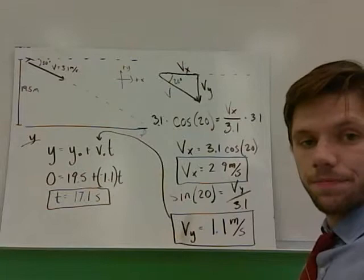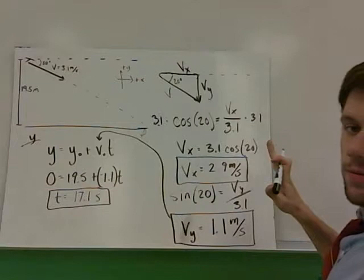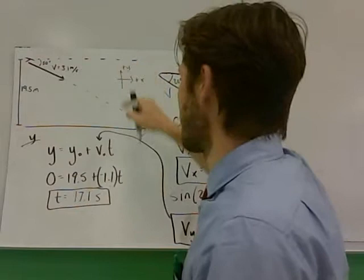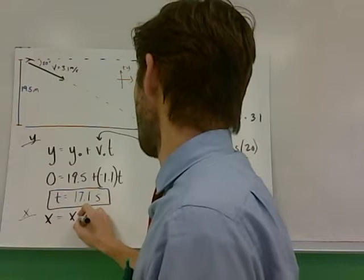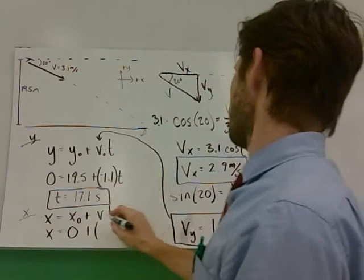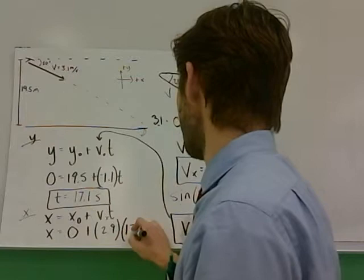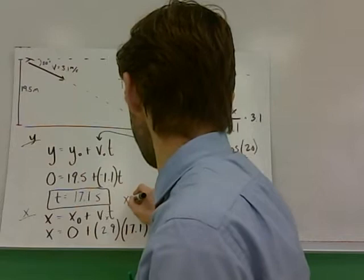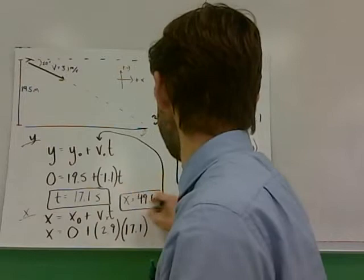That's how many seconds it takes the bird in the y direction to get to where the top of the water is. Now let's ask how far does the bird travel this way. Remember that's the same time it took the bird to get here. This time represents both how long it takes to get to the water and how long it takes to travel this way. In the x direction we'll use the x equation for constant velocity. Let's plug in some values. X would be what we want to find, we're starting at zero. The velocity in the x direction vx is 2.9 times t, 17.1 seconds. That gives us a distance traveled of 2.9 times 17.1 seconds, or x equals 49.6 meters. That's how far the bird travels in the x direction.